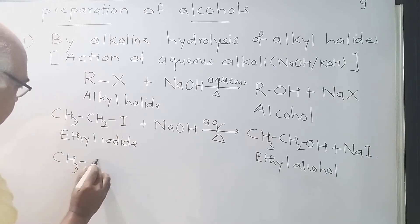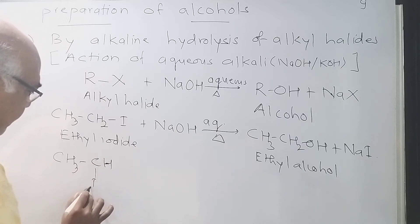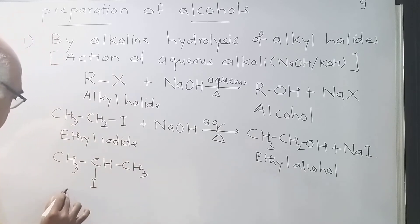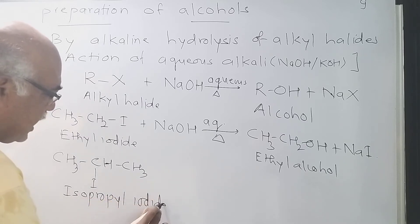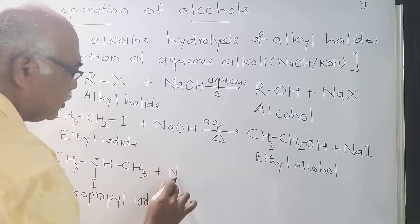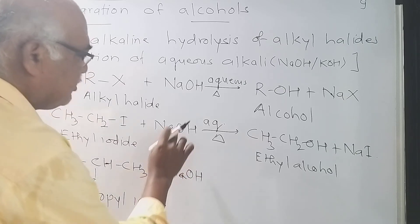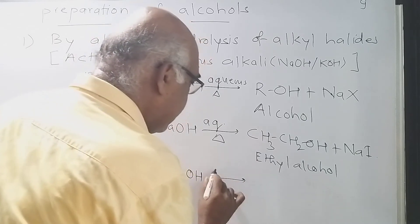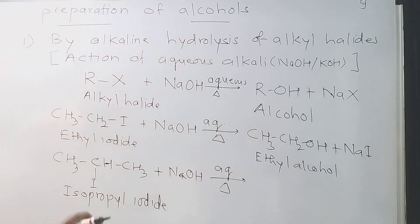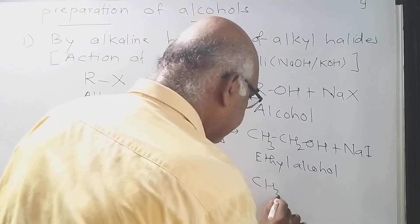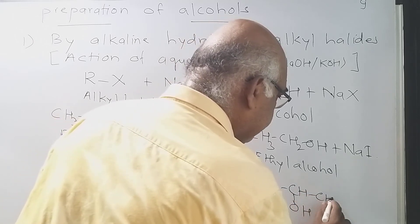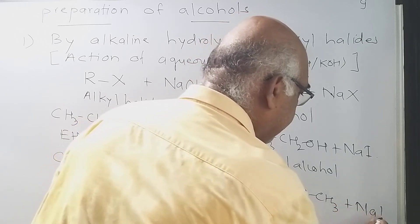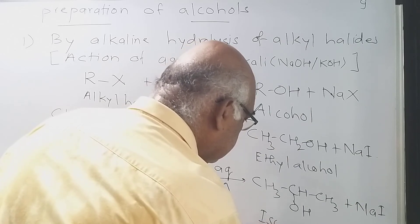If I change the alkyl halide to isopropyl iodide — CH3CHICH3 — and treat it with aqueous NaOH, you will get CH3CH(OH)CH3 plus NaI. You will get isopropyl alcohol.